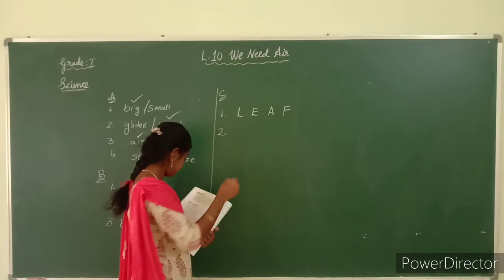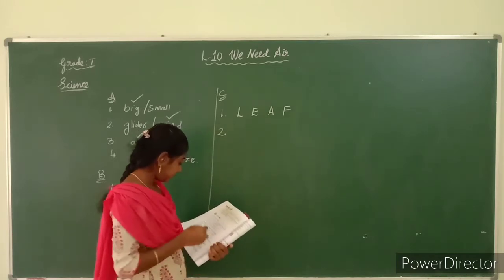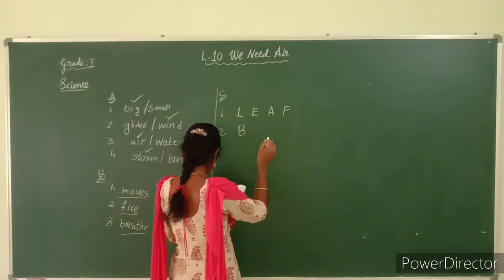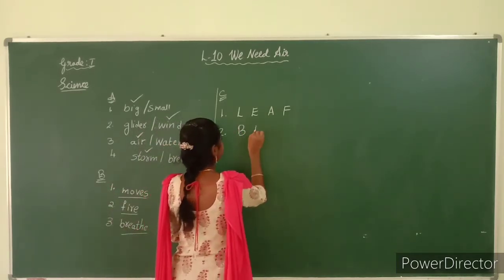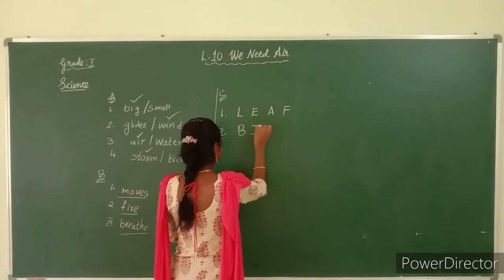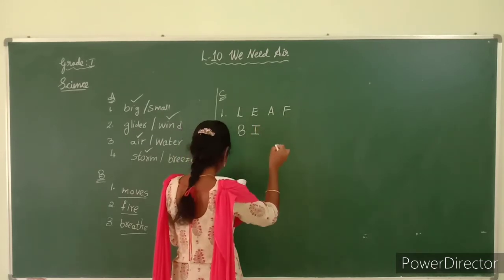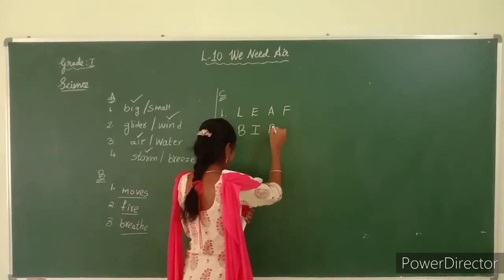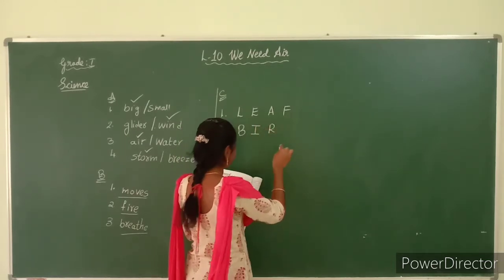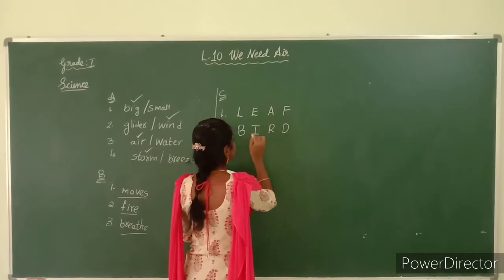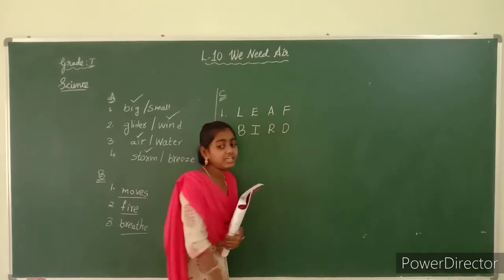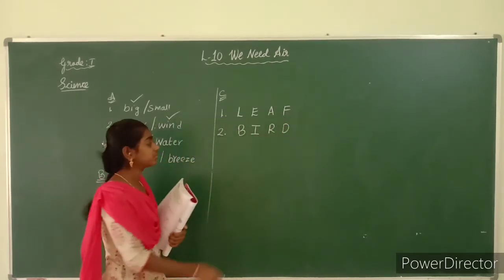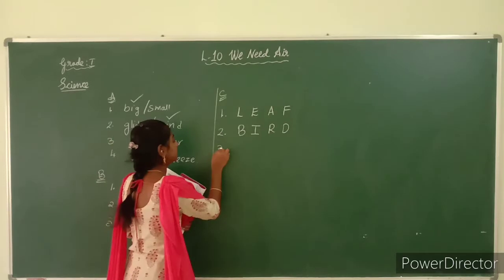Second one: B for balloon. Next: I for ice cream. R for rabbit. And D for duck. B-I-R-D. Bird.